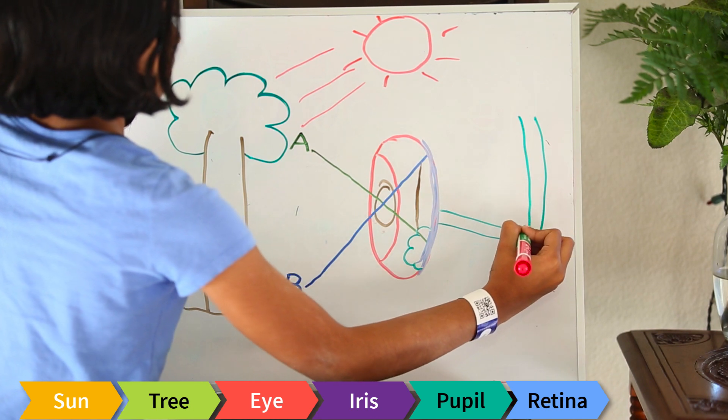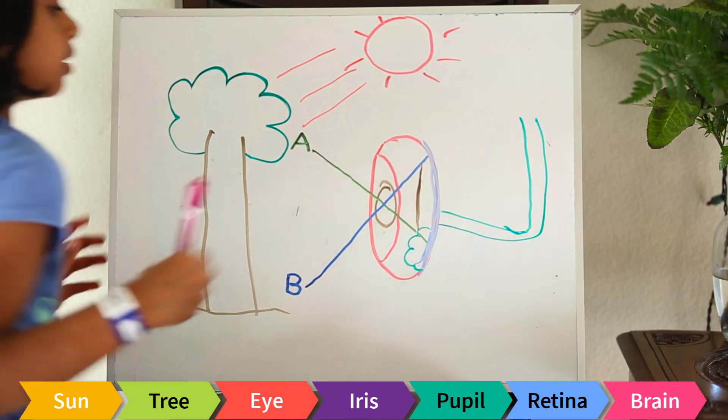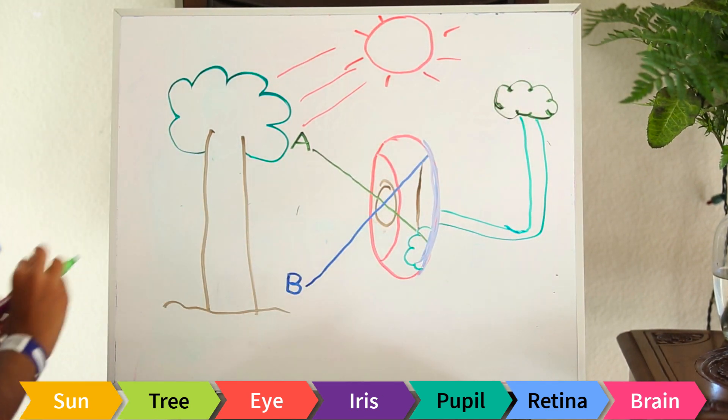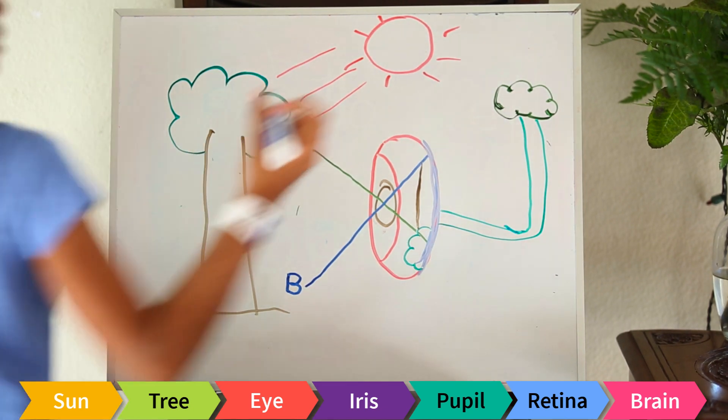Then the image goes to the brain through the optic nerve. That's the brain.